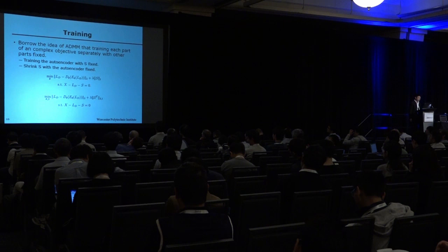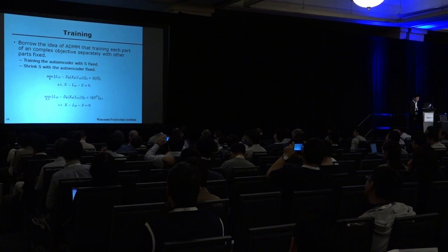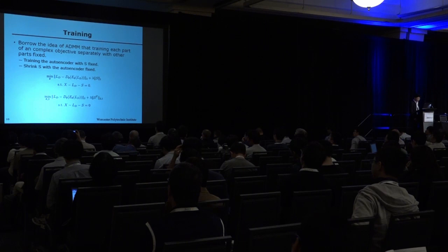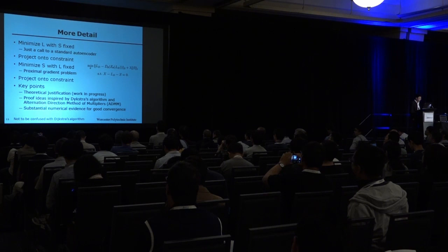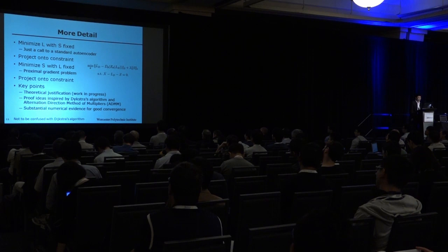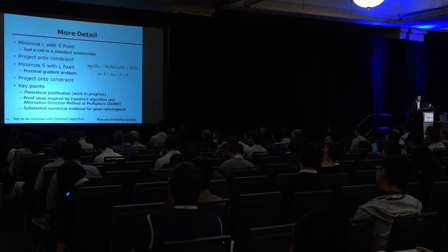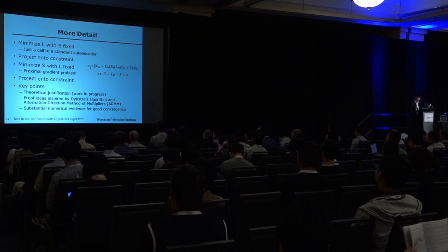For training, we borrow the idea of ADMM — training each part with the other parts fixed. We train the autoencoder with S fixed, and then we update S with the autoencoder fixed. If we fix S, the L part is a standard autoencoder, which can be minimized by back propagation. When we fix L, minimizing S becomes a standard proximal gradient problem. For our training method, we haven't had theoretical justification yet, but we have some ideas inspired by Dijkstra's algorithm and ADMM.